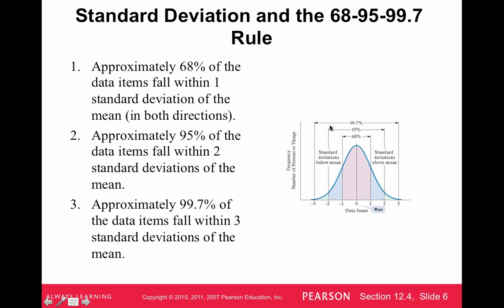Once you fall outside two standard deviations above the mean, we start to look at your height or your test score as being unusual. When we stretch out to three standard deviations, 99.7% of the data is within three standard deviations — that's basically 100%, just everything but 0.3%. So if your height or test score is more than three standard deviations above or below the mean, then you're very unusual.